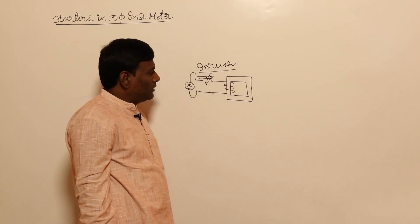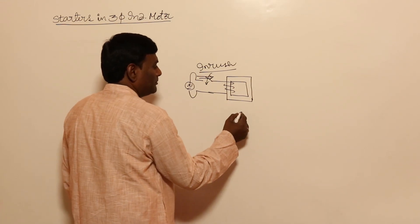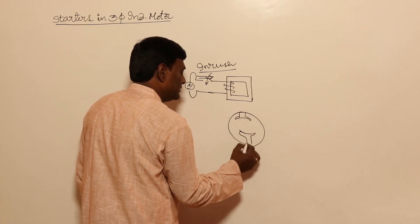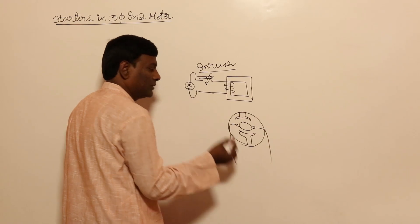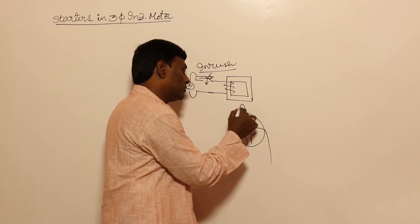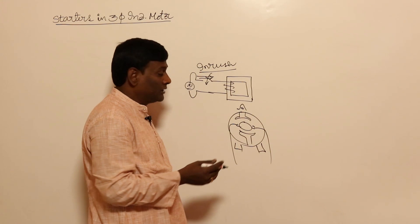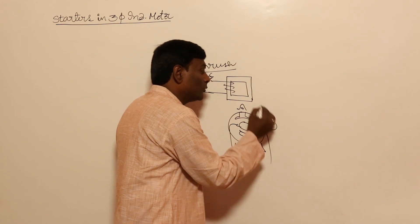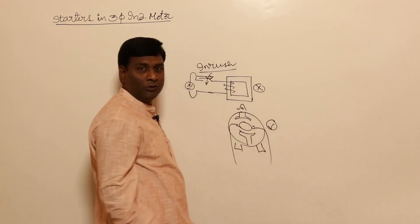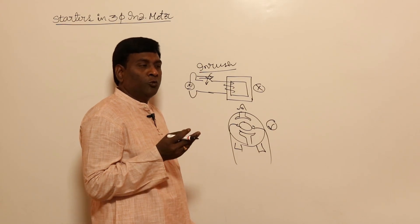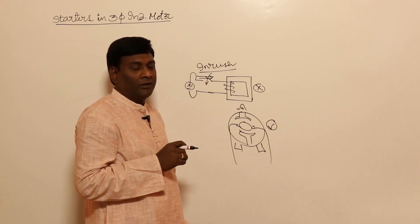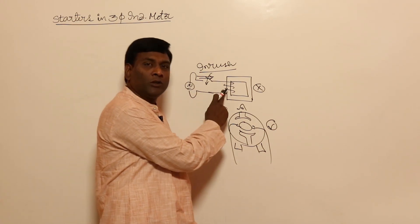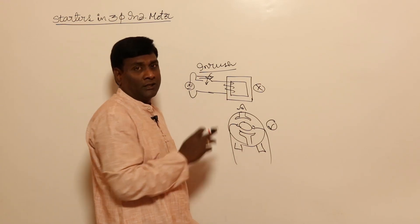In a DC motor also, if you close the switch without a starter, huge currents will flow. So a starter is compulsory in DC motors. We never use starters in transformers. In induction motors, we may use a starter or we may not — this is called a direct-on-line (DOL) starter, where we connect directly to the line.